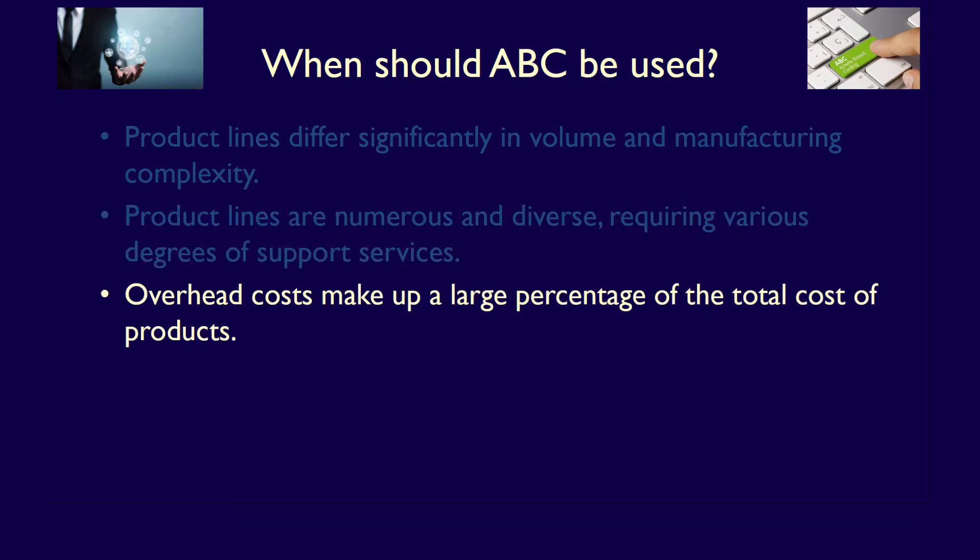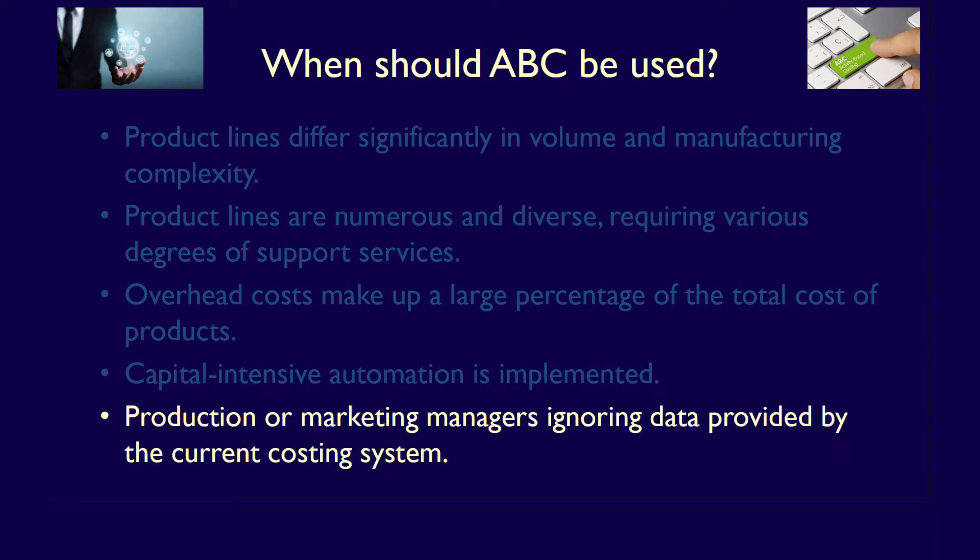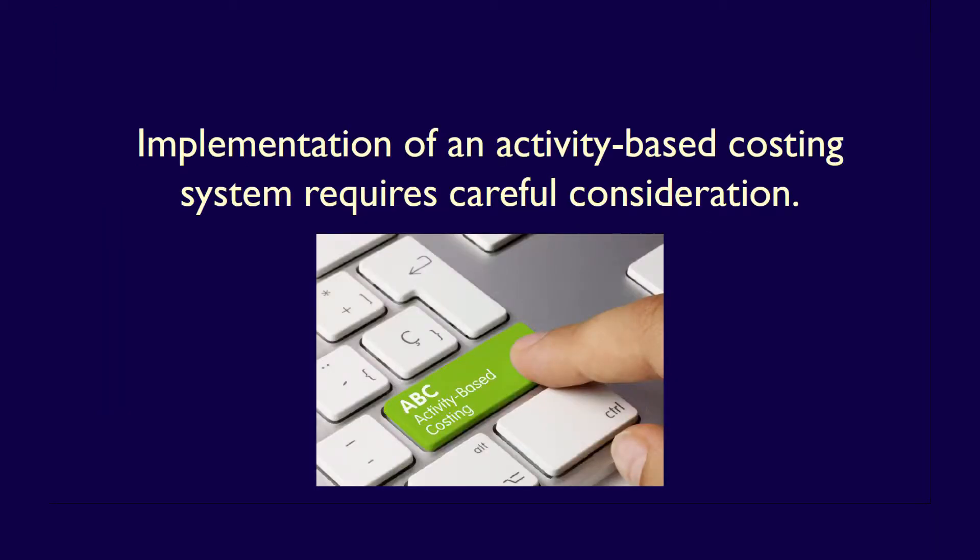Finally, if overhead costs make up a significant portion of the total cost of a product, then an ABC system will benefit the company by providing better cost allocations to products. Other factors, such as the automation of the manufacturing process and managers ignoring the information from the current costing system, are other indicators that support the implementation of an activity-based costing system. Ultimately, implementation of an activity-based costing system, given its costs and complexity, requires careful consideration. This is particularly true since the benefits of an activity-based costing system are often not apparent until after it's been implemented.